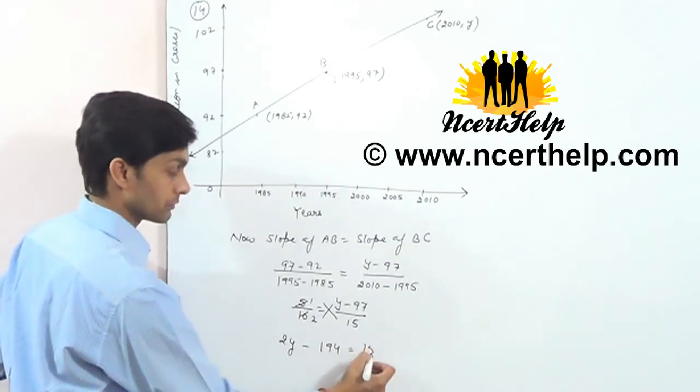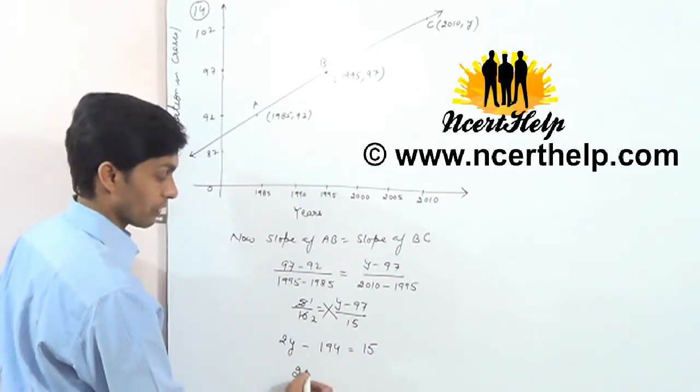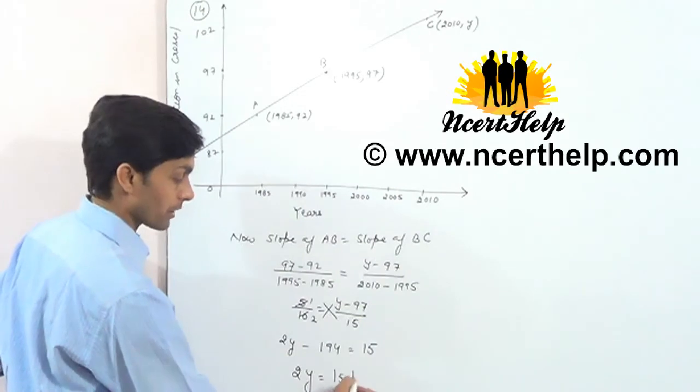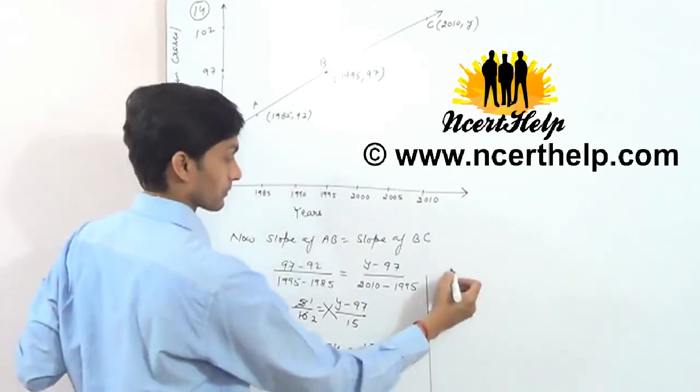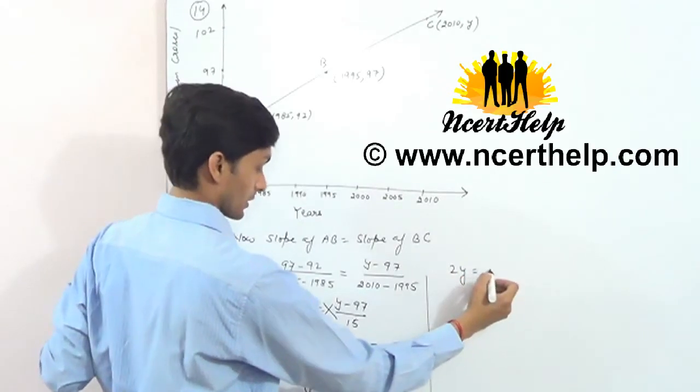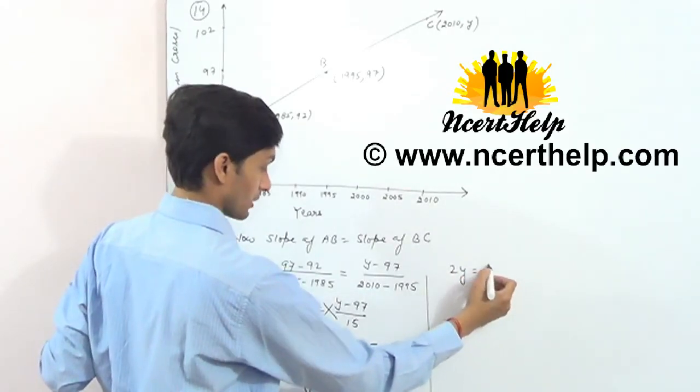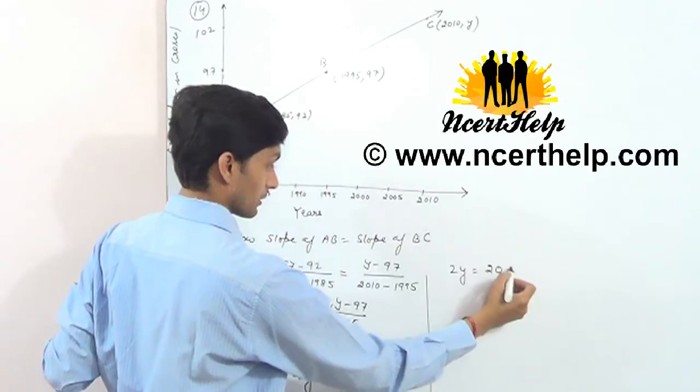2Y is equal to 15. 2Y is equal to 15 plus 194. 209, 29.